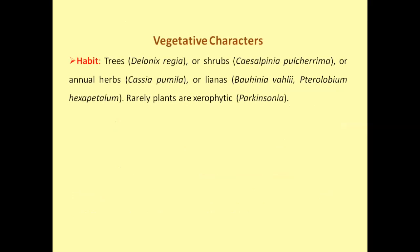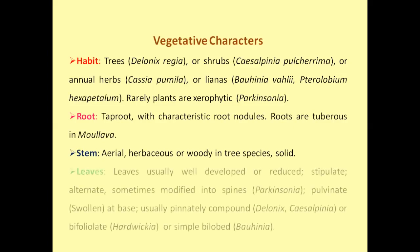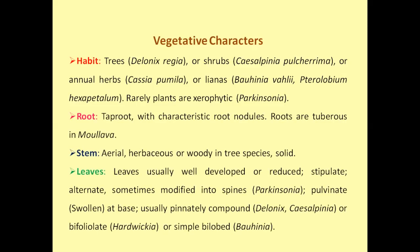When we observe the characters of a plant, we divide them into vegetative characters and reproductive characters. Let us discuss vegetative characters first. The habit includes trees, shrubs, annual herbs, lianas, and rarely aquatic or geophytic plants. The taproot system has characteristic root nodules. The roots are tuberous in Mucuna. The stem is aerial, branched, solid, herbaceous or woody in tree species. The leaves are usually well developed or reduced, stipulate, alternate, sometimes modified into spines. They have a pulvinate leaf base. The leaves are usually pinnately compound, bipinnate as in Hardwickia, or simple bilobed as in Bauhinia.